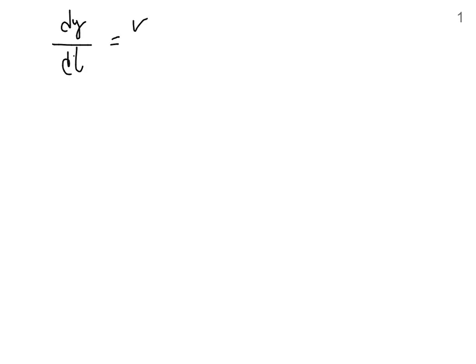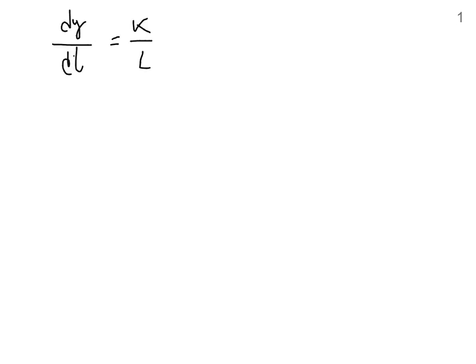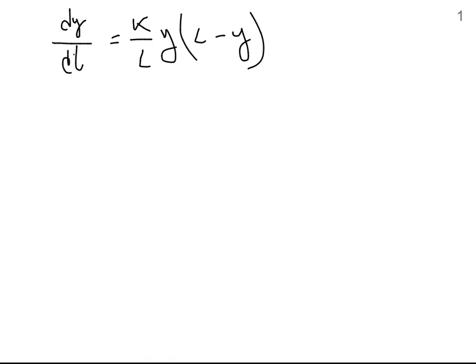Hello. So now we get the problem that we want to derive the second derivative of the logistic rule. We already found the first derivative, that was dy over dt equal to k over l times y times l minus y. This was the first derivative. Now we want to compute the second.